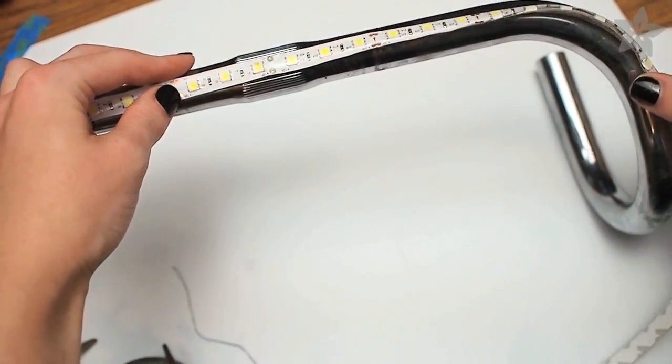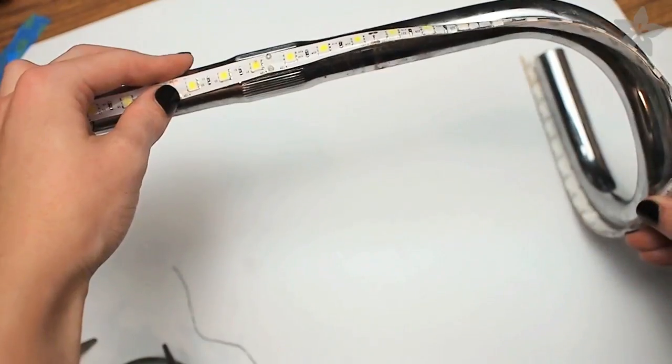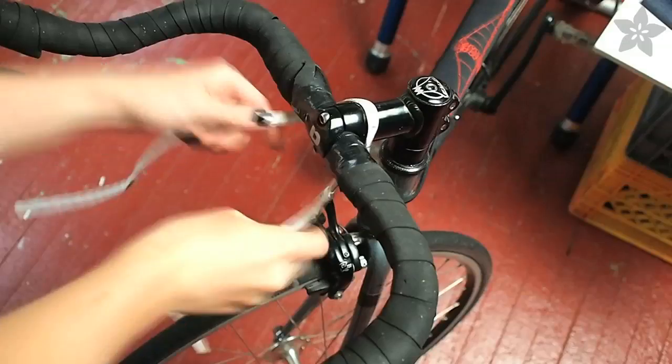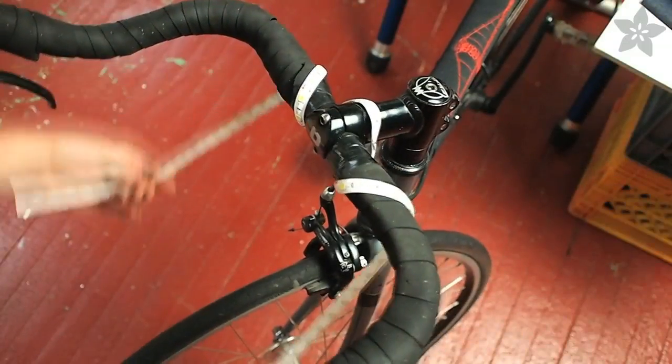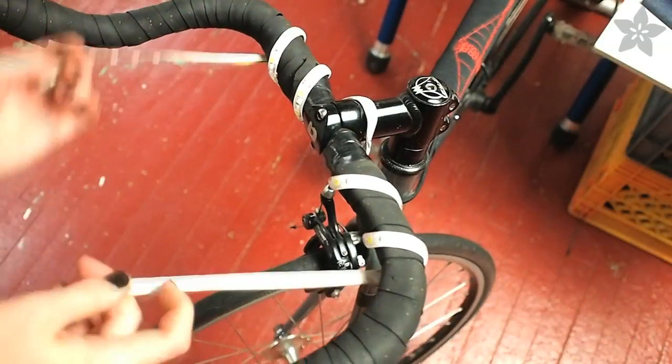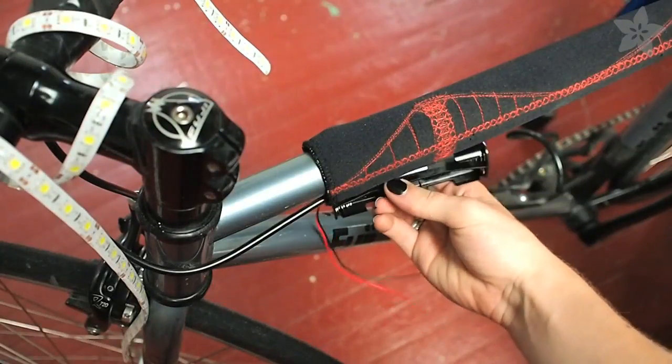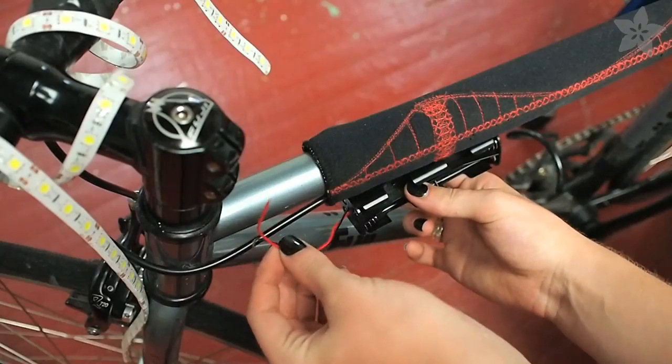Start by laying out your LED tape on your handlebars. One meter will cover a strip along these drop bars, while I'll use two meters on my own bike to do a spiral design. We'll store the batteries right underneath the top tube with a wire leading up to the handlebars.